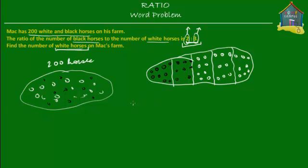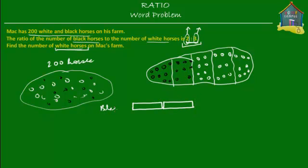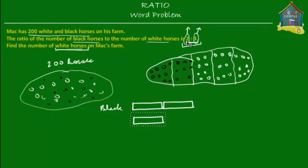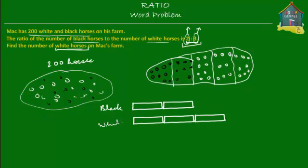So on the model, if we have a set of some size, I will have 2 of these sets for the black horses, as the ratio tells me. So I'll have 2 sets for black horses. The white horses would be 3 units, because for 2 units of black horses there are 3 units of white horses. The size of each of these units or sets is the same — so all 5 units are equal in size. And we know there are a total of 200 horses.